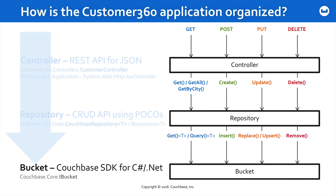That in turn is going to rely on the underlying Couchbase API, which is primarily exposed through the bucket interface. We'll be looking at methods like insert, replace, upsert, and remove, as well as generically typed GET and query methods, to ensure that the mapping between JSON and our data model classes happens via the API controller. The magic of Microsoft — it's some amazing things that they do.